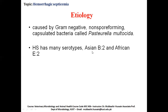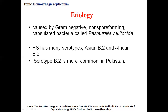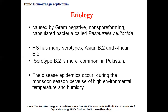Pasteurella multocida causing hemorrhagic septicemia has many serotypes found in different parts of the world. Among those serotypes, two are important: Asian B2 and African E2. With reference to Pakistan, you have to remember that serotype B2 is the most common serotype found in Pakistan — in other words, hemorrhagic septicemia in Pakistan is due to serotype B2.